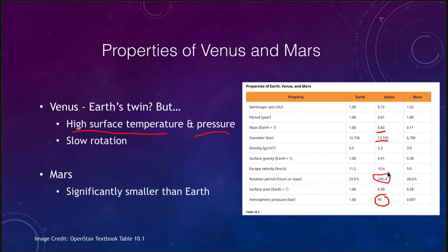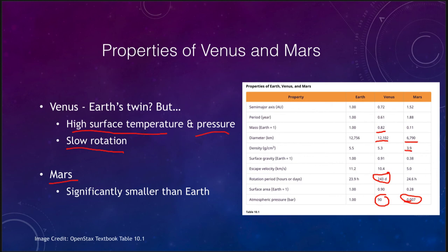Another difference with Venus is its rotation — the rotational period is 243 days, giving it a very long day-night cycle due to its very slow rotation. Mars, on the other hand, is more Earth-like in many ways because it does not have the high surface temperature and pressure. In fact, its pressure is very low — much too low to be able to breathe, even if it had oxygen. Mars is much smaller than the Earth, nearly half the size. Its density is a lot less, showing a higher concentration of rock and less metal, and its surface gravity is also less. However, the day on Mars is just about the same as a day on Earth: 24 and a half hours versus about 24 hours here. The big difference with Mars is that it is significantly smaller and has lost its atmosphere.